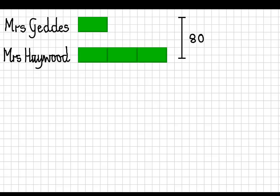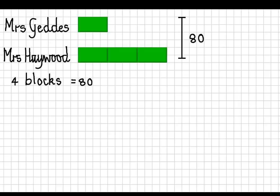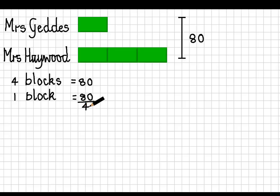So four blocks equals 80. Therefore, if four blocks equal 80, one block is equal to 80 divided by four. Four goes into 80 twenty times. So we can see that one block equals 20 pears.